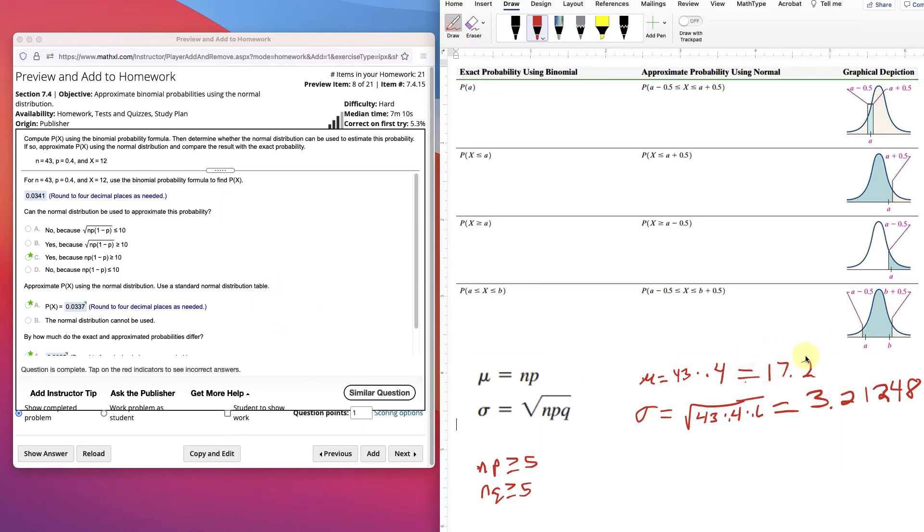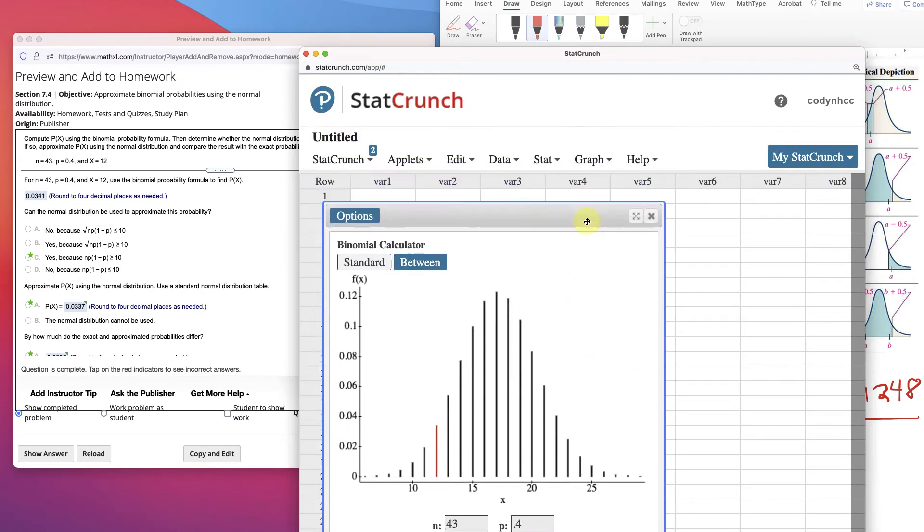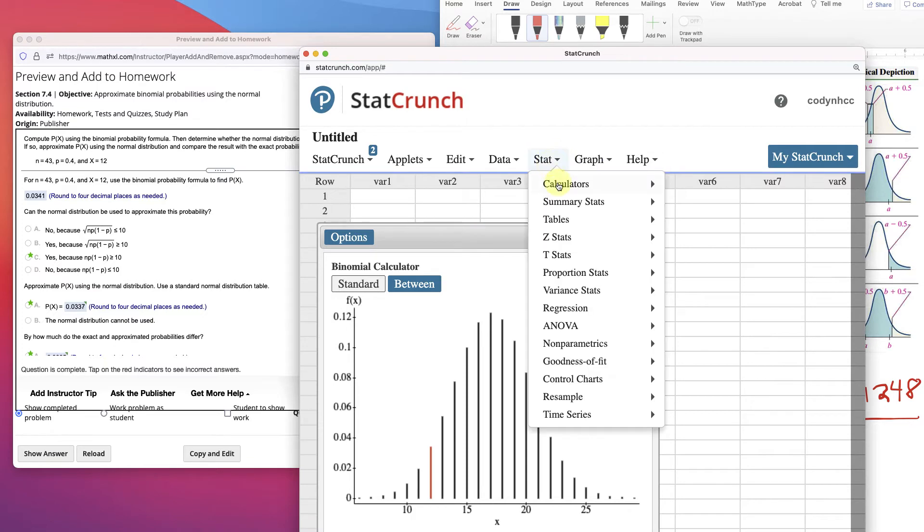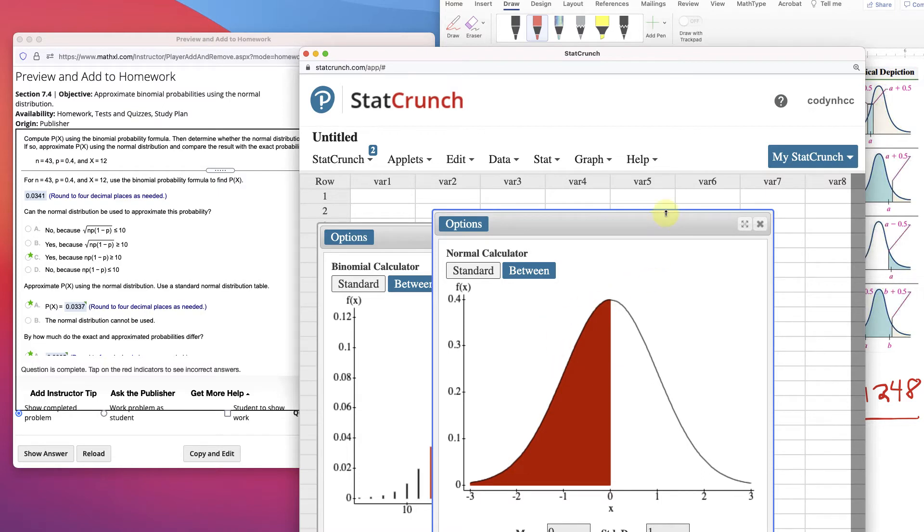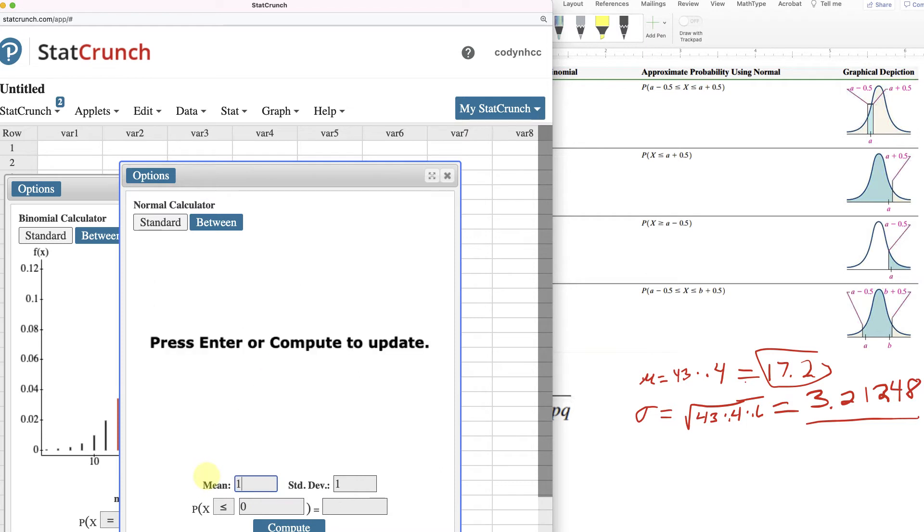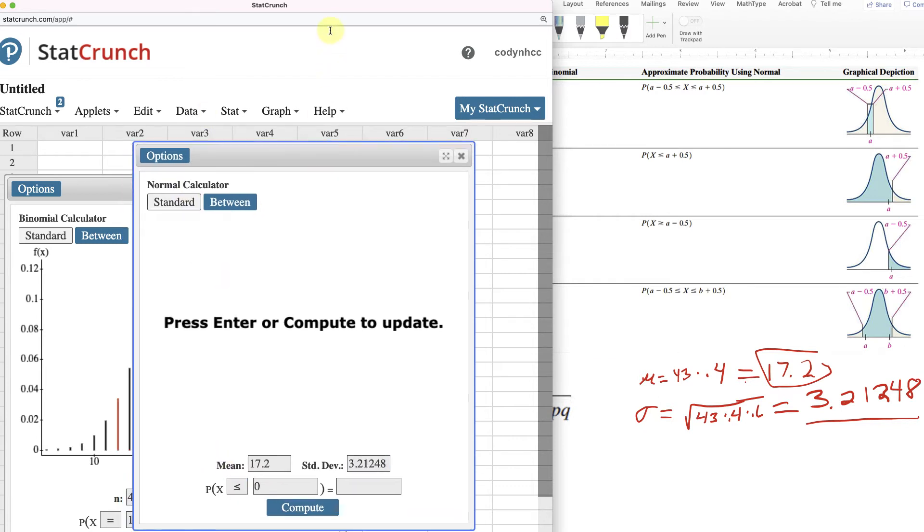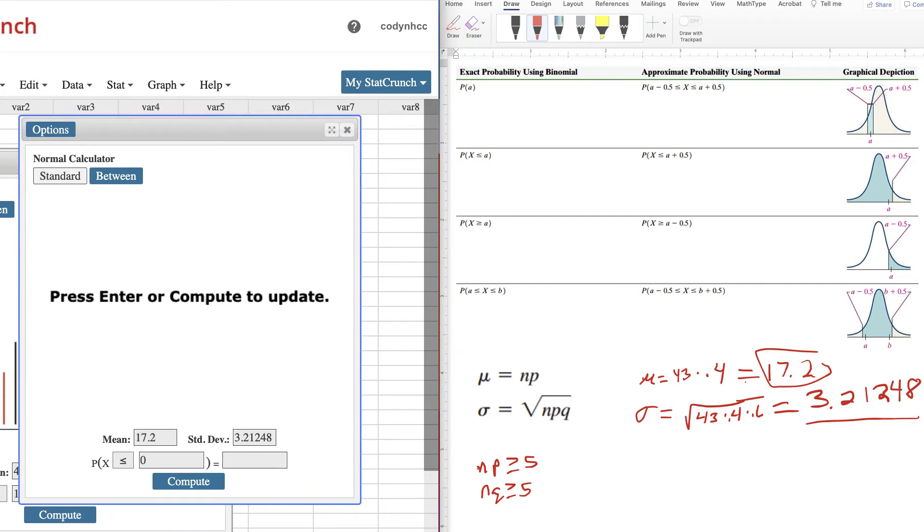And this is my mean I'm going to use, and this is my standard deviation. So I'm going to go ahead and grab StatCrunch. I'm going to open up a stat calculator, and normal, because we're doing a normal approximation. We're going to put in our values that we have now. The mean is 17.2. The standard deviation is 3.21248. And again, we want equal to 12. Let's talk about that for a moment.